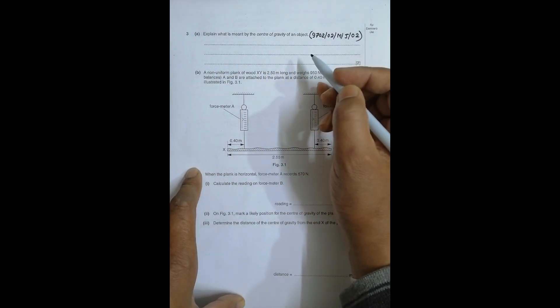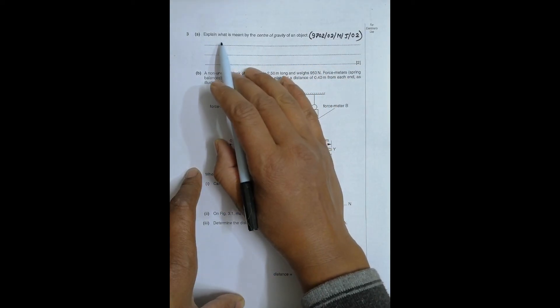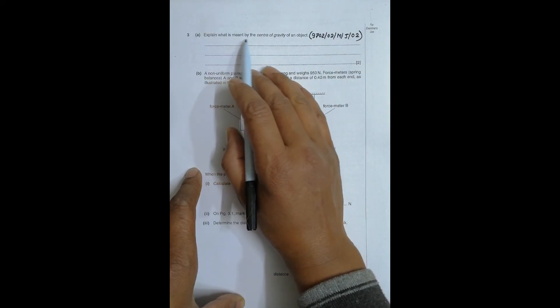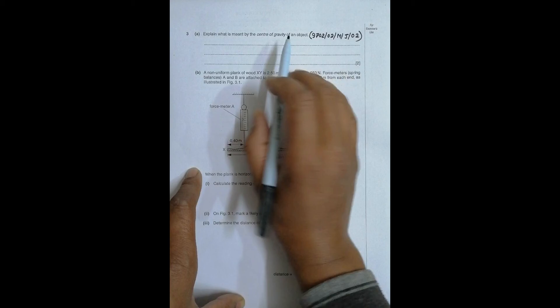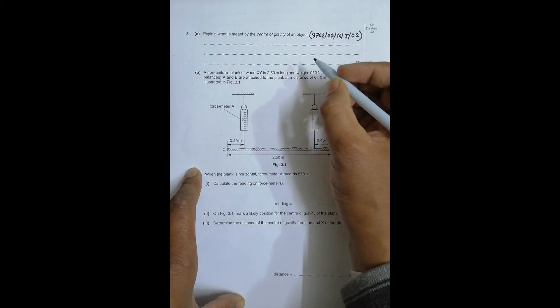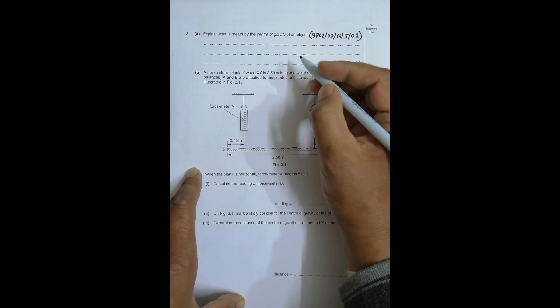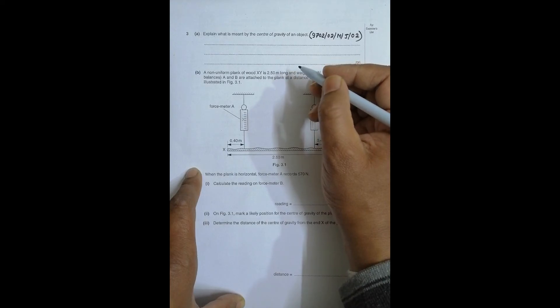This question is about the chapter of forces. The first question says explain what is meant by the center of gravity of an object. We have discussed this in several cases. It is the point through which the whole weight of the body is supposed to act.